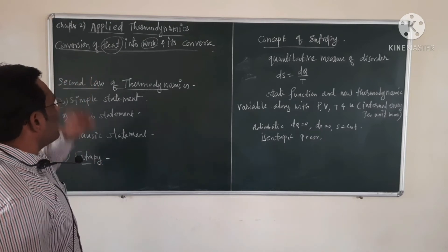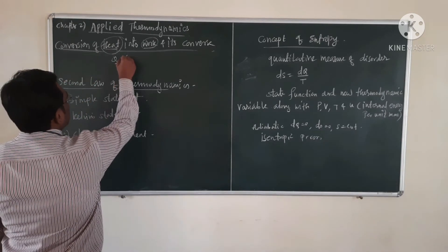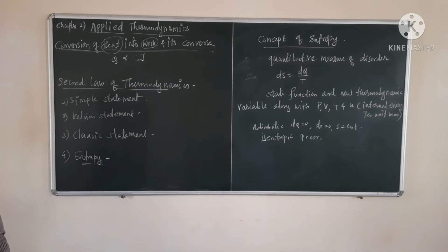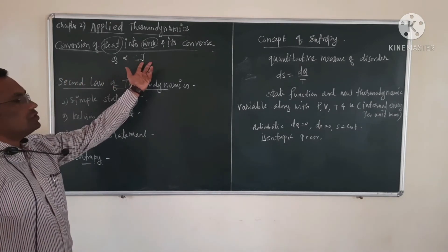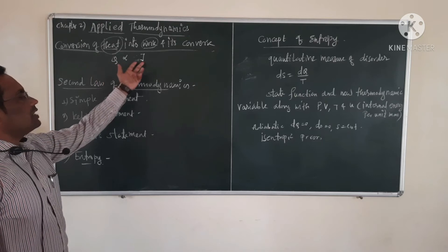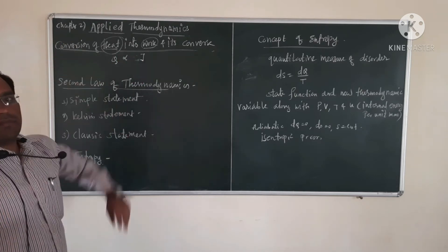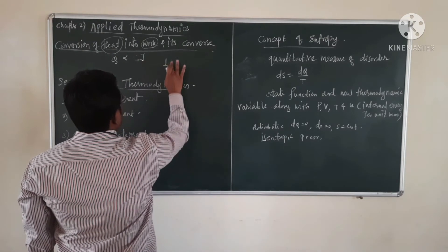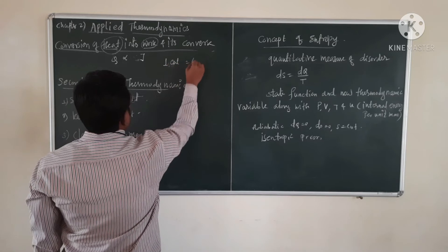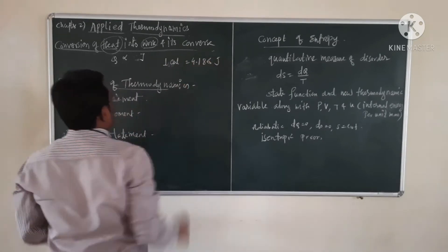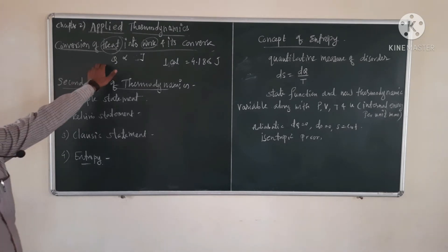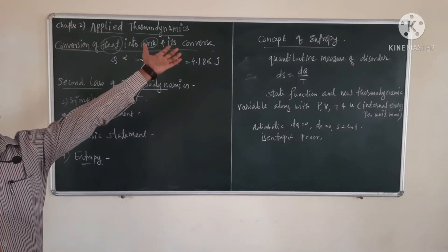Q, suppose, is the heat energy which is directly proportional to J, the mechanical equivalent of heat. So Q is directly proportional to J, where Q is heat energy and J is the mechanical equivalent of heat. In other words, we can convert joules into calories: 1 calorie is equal to 4.186 joules. In this way, heat and work are directly proportional — more heat, and we can get more work from that system.